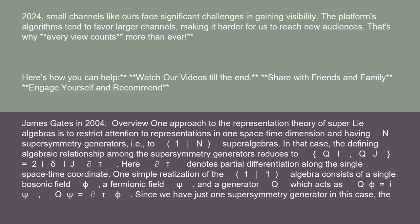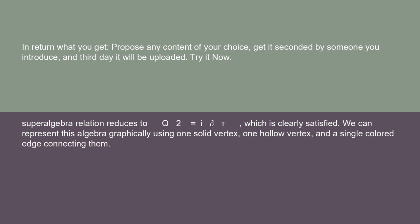One simple realization of the 1|1 algebra consists of a single bosonic field φ, a fermionic field ψ, and a generator Q which acts as Q φ = iψ and Q ψ = ∂φ. Since we have just one supersymmetry generator in this case, the superalgebra relation reduces to Q² = i∂, which is clearly satisfied.